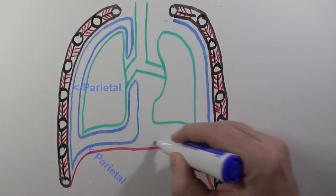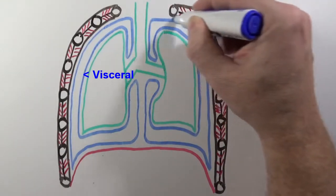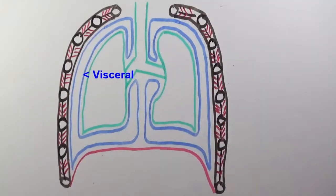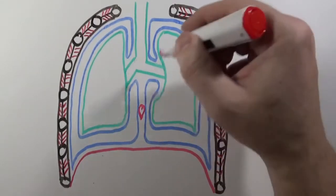And then it reflects back onto the lung surface where it's called the visceral pleura. Visceral refers to visceral organ, the organ, and in this case we're talking about the lung. I'm going to draw a little heart in here to remind us that the heart is situated here and that the pleura would actually cover it.